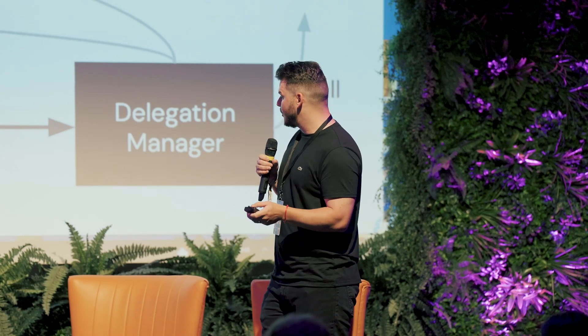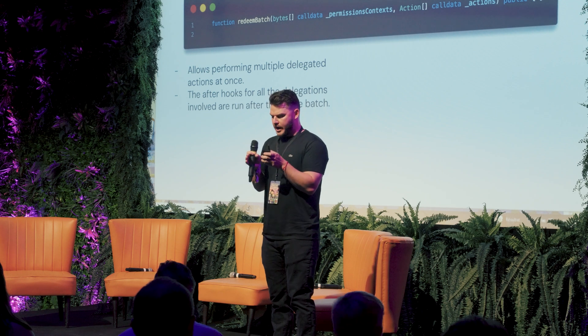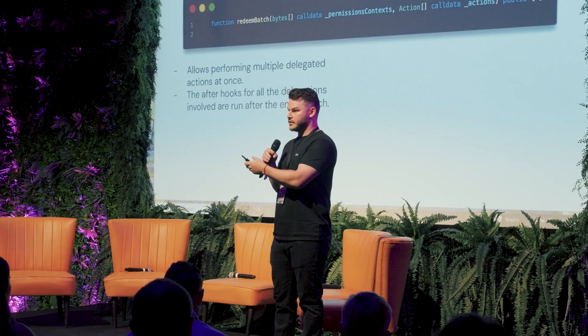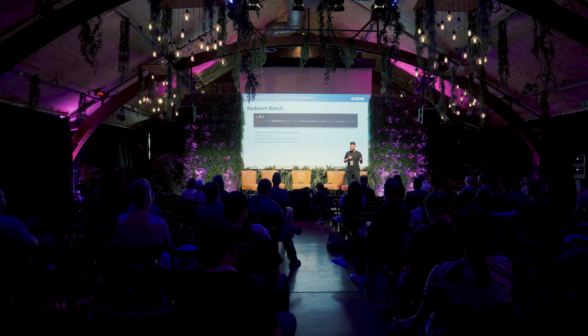What if we also have redeem batch? Redeem batch has an array of bytes of permission context — so an array of delegation chains — and then an array of actions. This allows you to perform multiple delegated actions in one go, in one atomic batch. How it works is all the before hooks of the caveat enforcers execute, then all the array of actions execute, and then all the after hooks of the caveat enforcers execute. The after hooks can then check that all of those actions have executed successfully. Atomic batches — very cool stuff. This is how the commissions worked in Red Balloon.